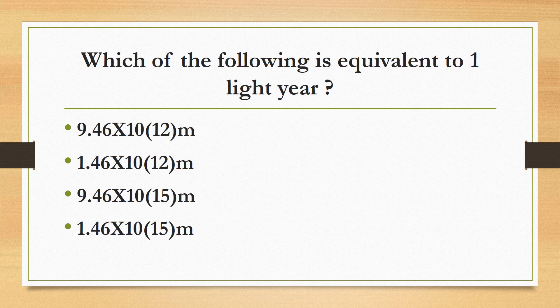Which of the following is equivalent to one light year? 9.46×10¹² meters, 1.46×10¹² meters, 9.46×10¹⁵ meters, or 1.46×10¹⁵ meters? The correct answer is 9.46×10¹⁵ meters. In kilometers, one light year equals 9.46×10¹² kilometers.